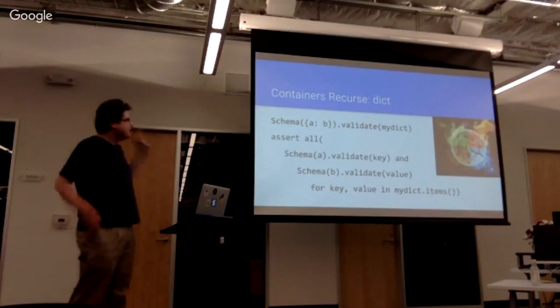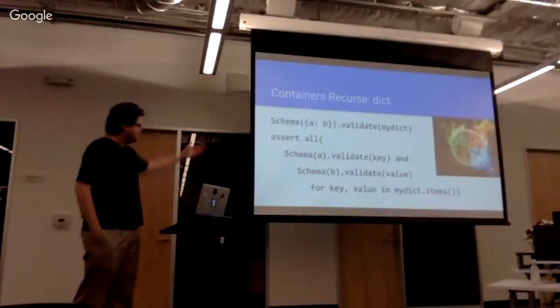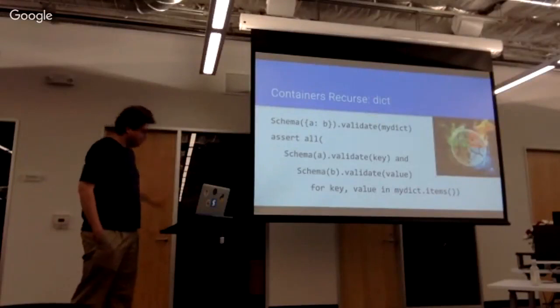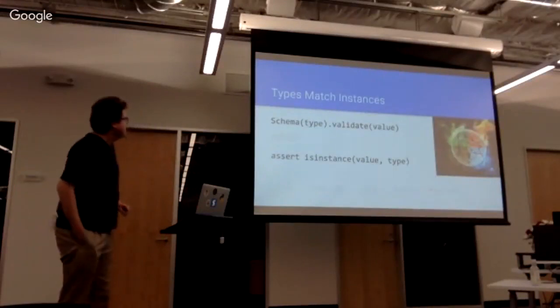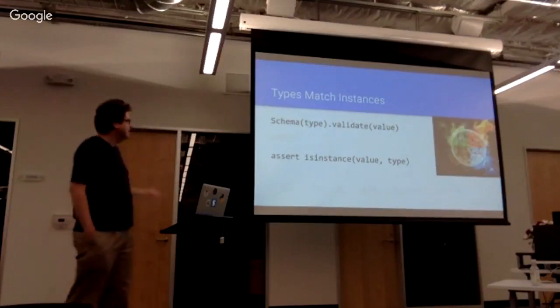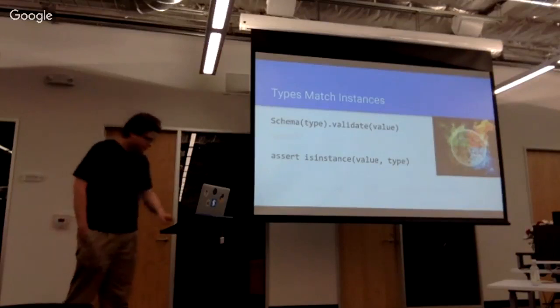For dictionaries, the key and value can be a schema. And it will simply recurse downwards and apply the sub schema to all the keys and all the values. For types, type match instances, so we always saw some examples of that, like str and int. It's pretty intuitive.